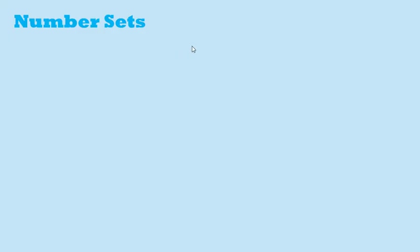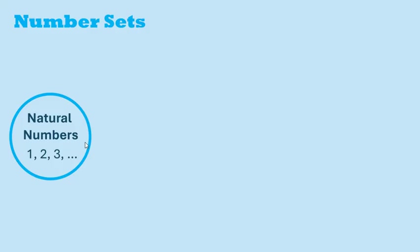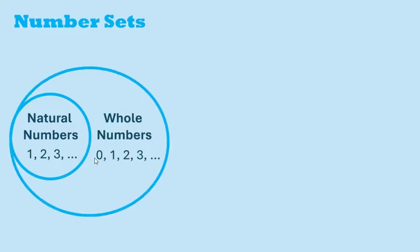First, let's talk about number sets. These are basically different groups of numbers. Natural numbers are the counting numbers, starting at 1 and going on forever. Whole numbers are the natural numbers and 0.